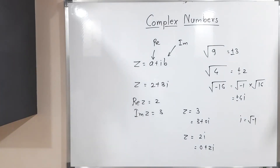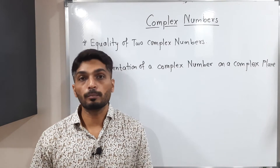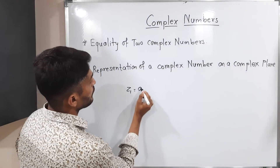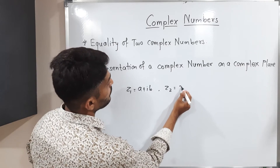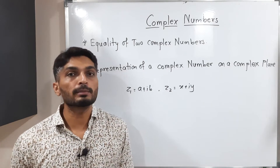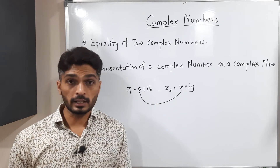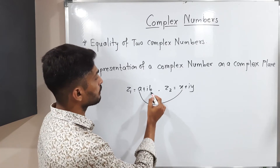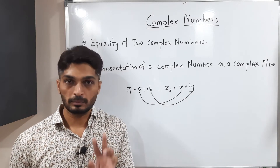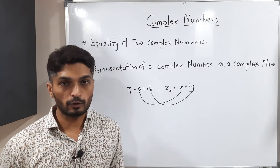Let us discuss equality of two complex numbers. Suppose z1 equals a plus ib and z2 equals x plus iy. We say these two complex numbers are equal if the real part of z1 equals the real part of z2, and the imaginary part of z1 equals the imaginary part of z2. Only then can we say z1 and z2 are equal.